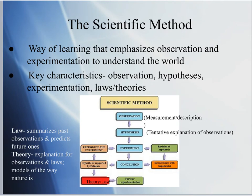In the later half of this chapter, the author talks about the scientific method. The scientific method is his general term for the science process of figuring out the connection between things by observing and experimenting with substances. The scientific method is just a way of learning that emphasizes observation and experimentation to understand the world.